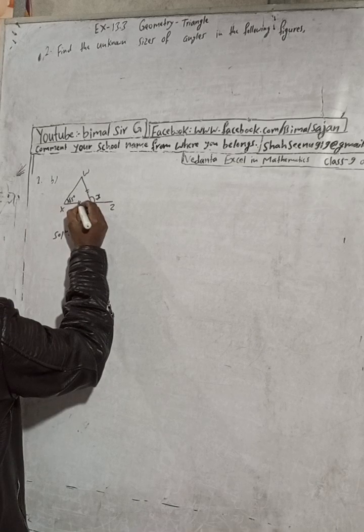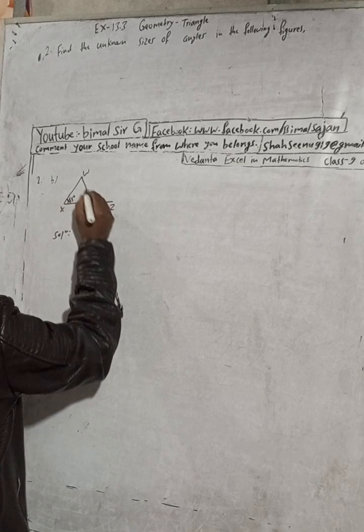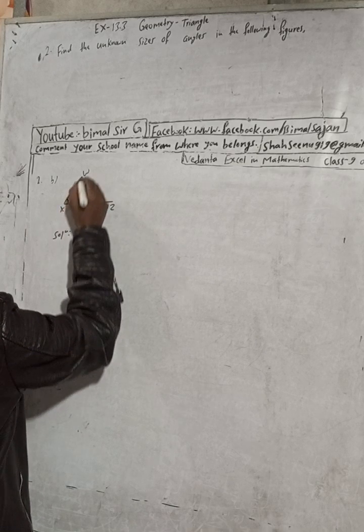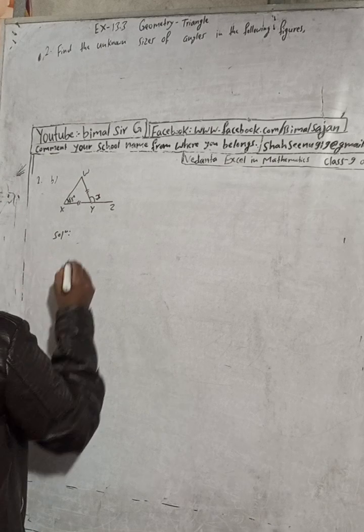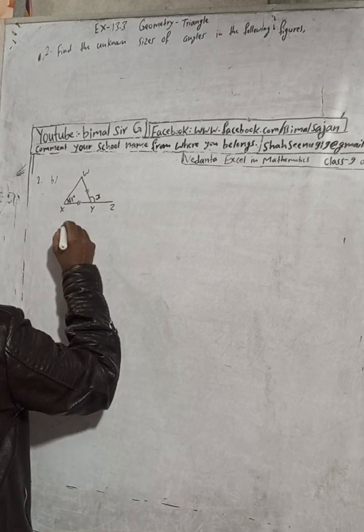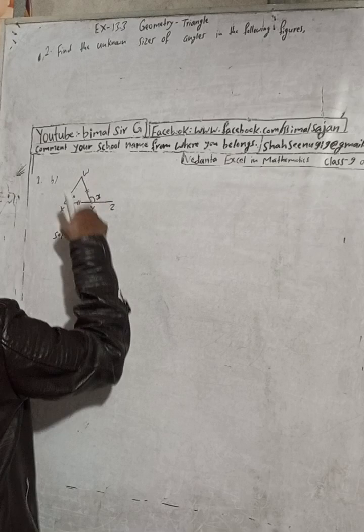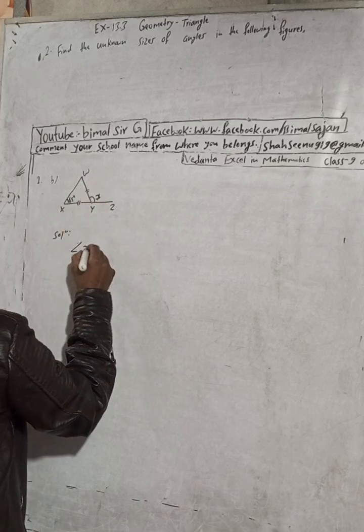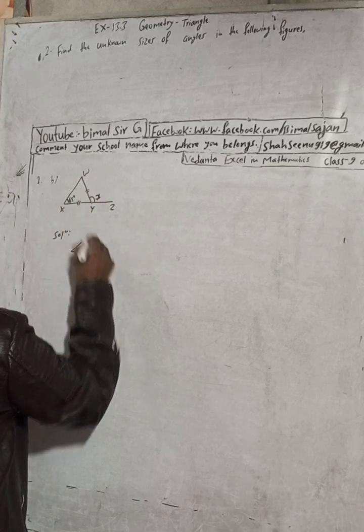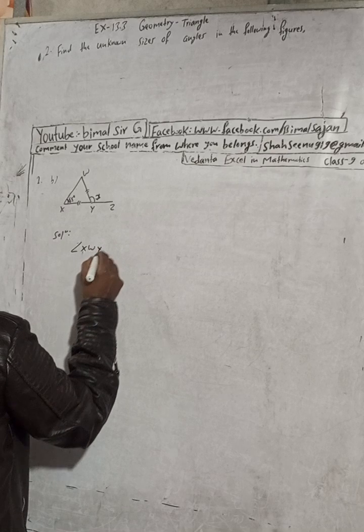And this is W, and this is shown equal. That means this is an isosceles triangle. Base angles are equal. So we can write here, angle XWY is equal...